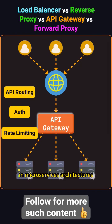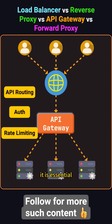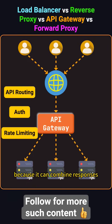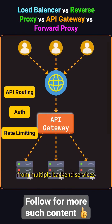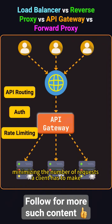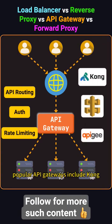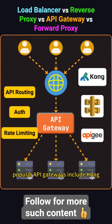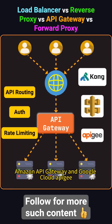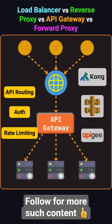In microservices architectures, it is essential because it can combine responses from multiple back-end services, minimizing the number of requests a client has to make. Popular API gateways include Kong, Amazon API Gateway, and Google Cloud Apigee.